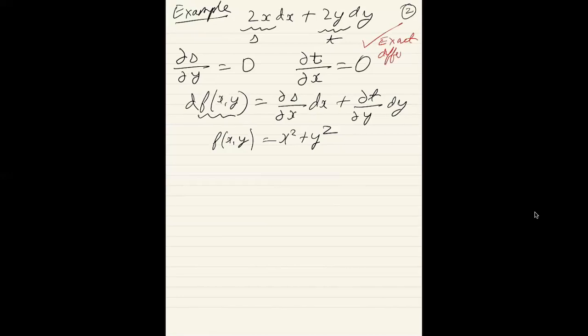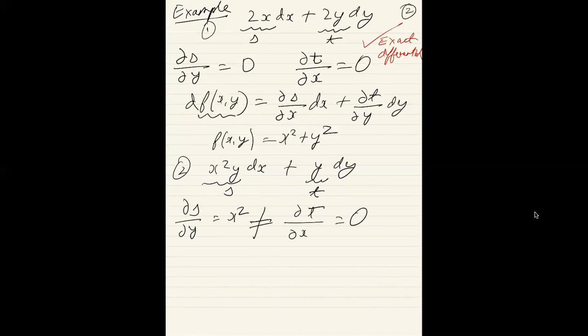Let's look at a function which is not an exact differential and we can see how easy it is to check. Let's consider x squared y dx plus y dy. So this is our s and this is our t. In this case, partial s by partial y is equal to x squared while partial t by partial x is equal to zero. So they are not the same.